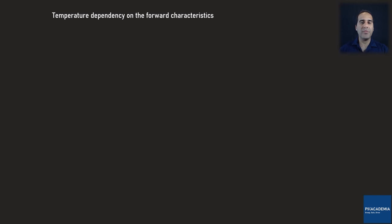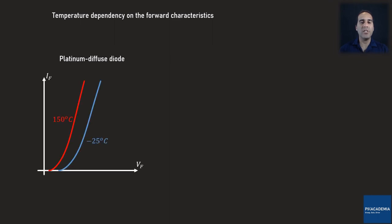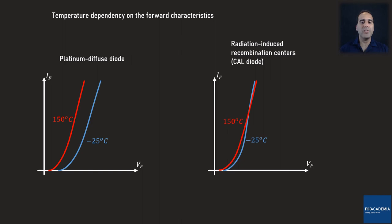Another aspect to consider is the temperature dependency of the forward characteristics of the PIN diode — specifically, what happens to the forward voltage when temperature rises or drops. This dependency largely depends on the manufacturing technology. For example, if platinum diffused technology is used, increased temperature causes the forward voltage to decrease regardless of the forward current. However, if radiation-induced recombination centers technology is used, increased temperature causes the forward voltage to drop at low currents, but above a certain forward current level, increased temperature makes the forward voltage larger than at lower temperature.